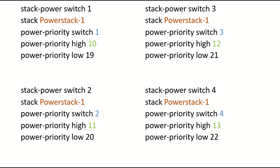In global configuration mode we type 'stack-power switch 1' and specify which stack it belongs to. Switches one, two, three, and four all have to belong to the same power stack. Then 'power-priorities' — this is not the number of the switch, this is the priority value. In this case I used one, two, three, and four because we have a ring topology of four switches maximum. Then the high priority ports are 10, 11, 12, 13, and the low priority ports are 19, 20, 21, 22.